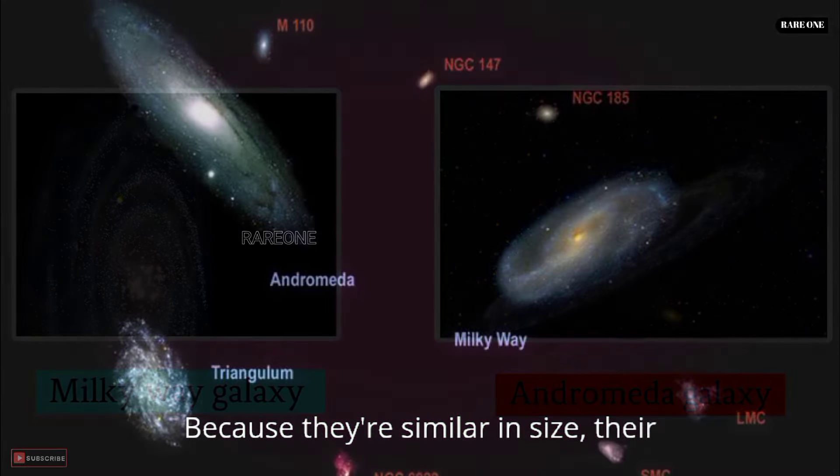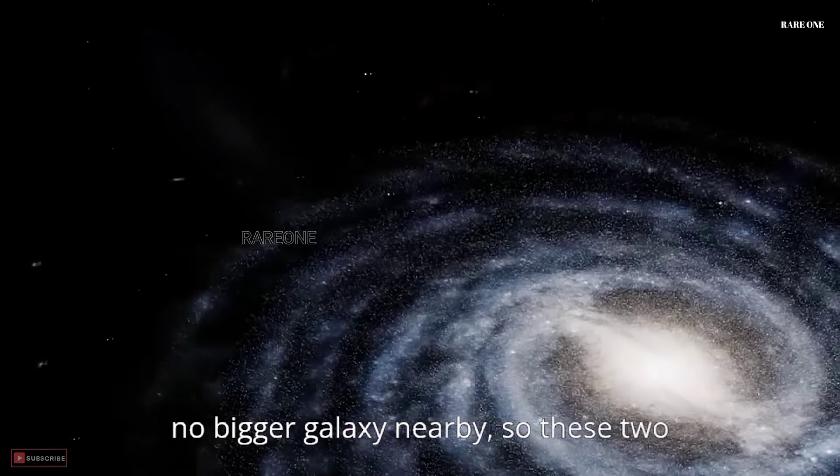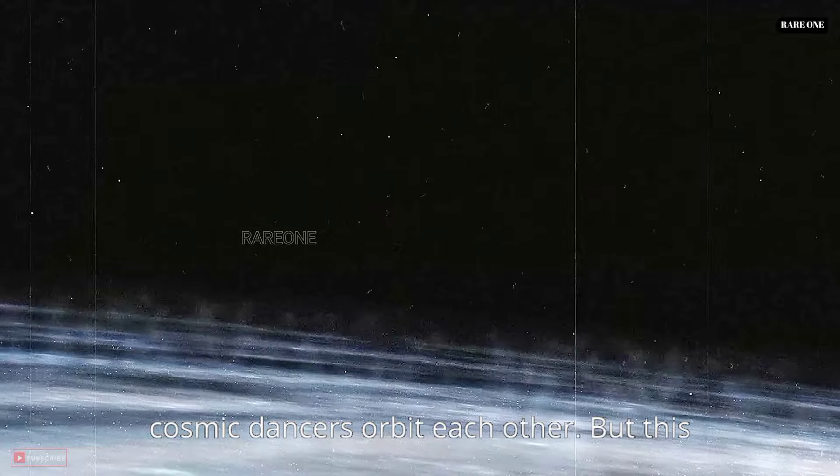Because they're similar in size, their center of mass is between them. There's no bigger galaxy nearby, so these two cosmic dancers orbit each other.